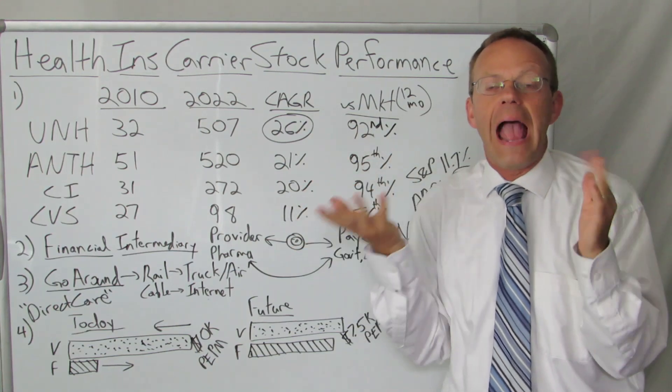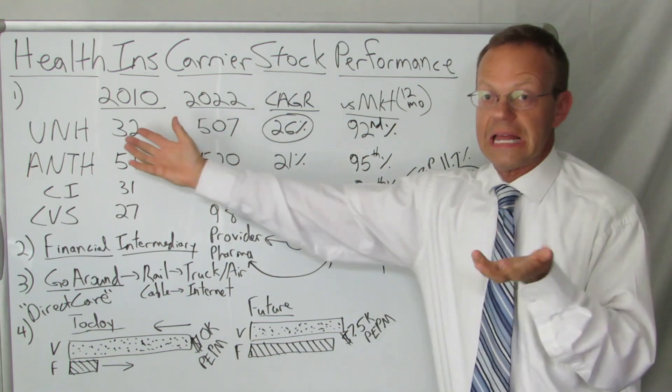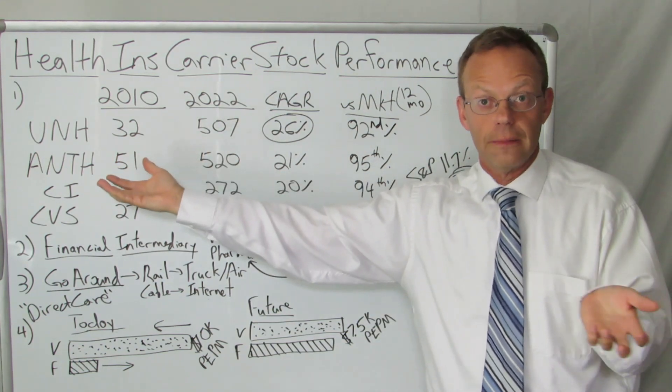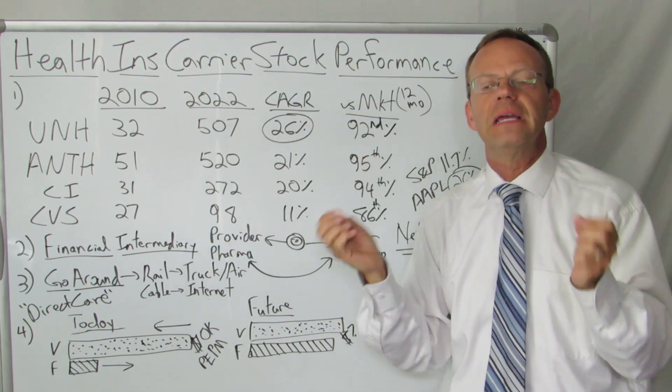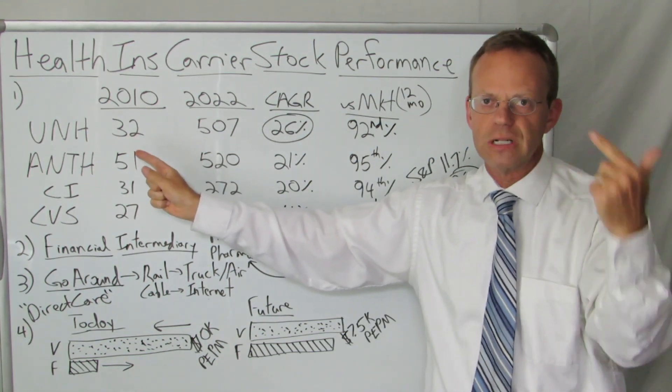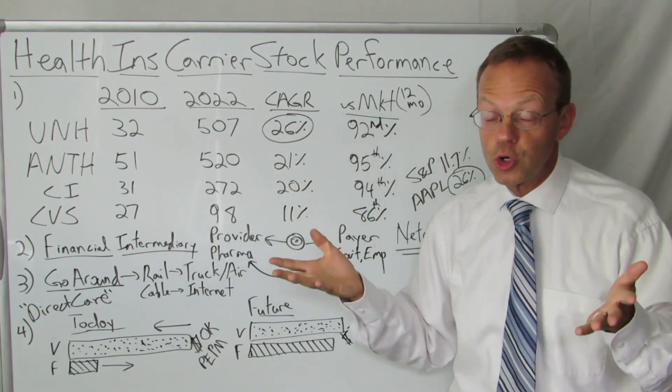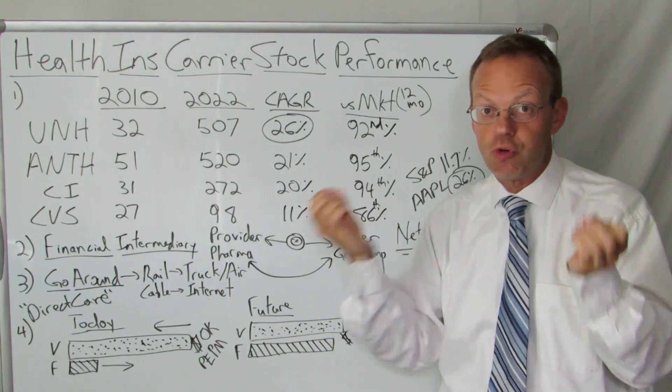UnitedHealth Group's compound annual growth rate is the same as Apple's during that same period of time. Apple's compound annual growth rate was also 26%. You're saying, how can that be? Apple is worth literally trillions of dollars, and United is worth less than a trillion in total market capitalization. The reason is because in 2010, Apple already had a much larger market capitalization than United. But they both grew at the same rate.